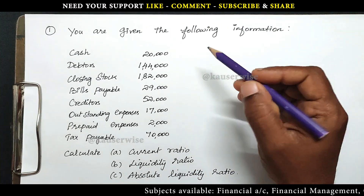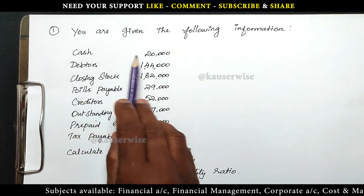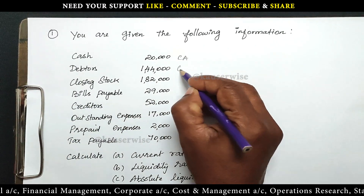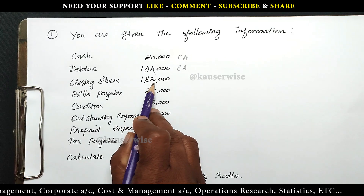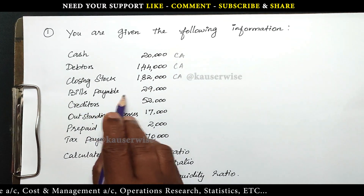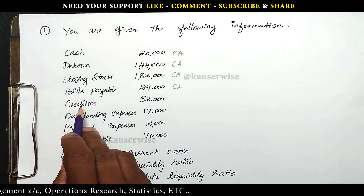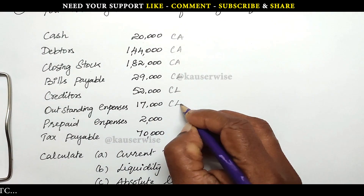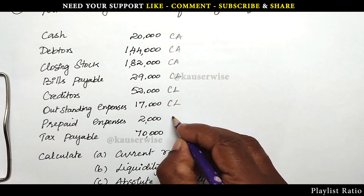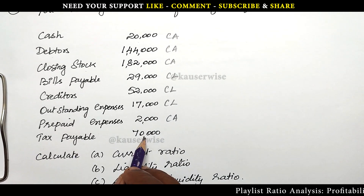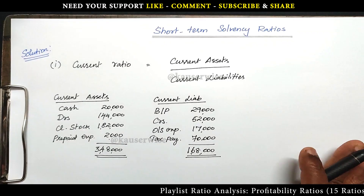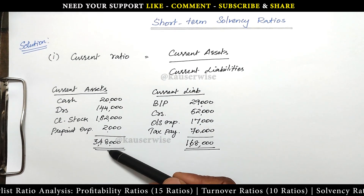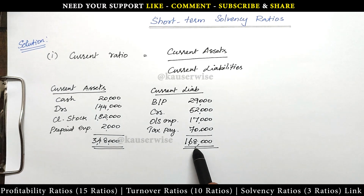See the problem — figure out the current assets and current liabilities. Cash 20,000 is a current asset. Debtors 1,44,000 is a current asset. Closing stock 1,82,000 is a current asset. Bills payable 29,000 is a current liability. Creditors 52,000 is a current liability. Outstanding expenses 17,000 is a current liability. Prepaid expenses 2,000 is a current asset. Tax payable 70,000 is a current liability. Current assets total: 3,48,000. Current liabilities total: 1,68,000.